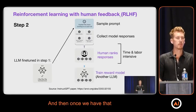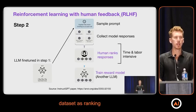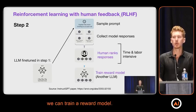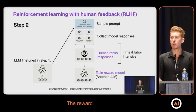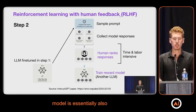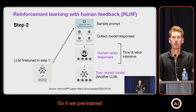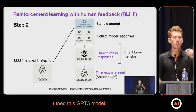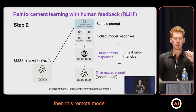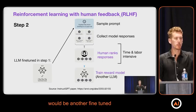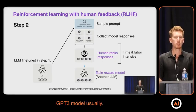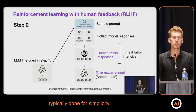Once we have that data set with the ranked responses, we can train a reward model. The reward model is essentially also an LLM, and often it's the same LLM that we used for pre-training. So if we pre-trained a GPT-3 model and fine-tuned this GPT-3 model, then the reward model would be another fine-tuned GPT-3 model usually. You can pick any model, but that's just how it's typically done for simplicity.